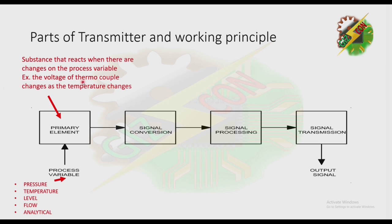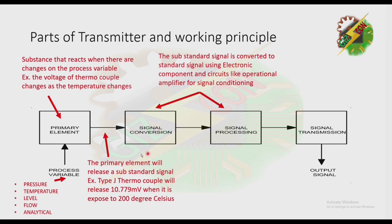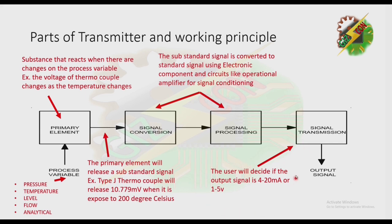For example, a type G thermocouple will release 10.779 millivolts when it is exposed to 200 degrees Celsius. Then, in the signal conversion and data processing stage, the substandard signal is converted to a standard signal using electronic components and circuits like operational amplifiers for signal conditioning. The 10.779 millivolts is now converted to a standard signal. For signal transmission, the user decides if the output signal is 4 to 20 milliampere or 1 to 5 volts.